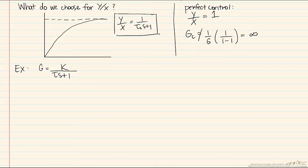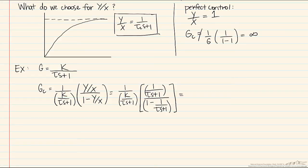We'll just take a look at a simple first-order process where G equals some gain K over (tau s plus 1). So when we substitute in here, we'll have Gc equals 1 over [K/(tau s + 1)], that's our value for G. And then we'll have our second term which is (Y/X) divided by (1 - Y/X). So remember that we're assuming that Y over X is 1 over (tau c s plus 1).